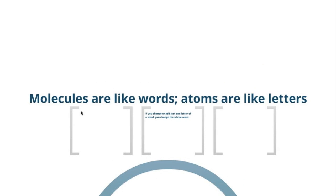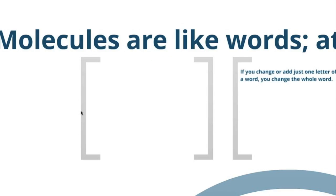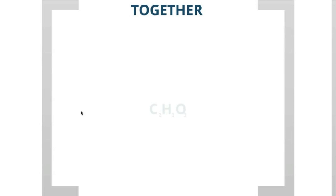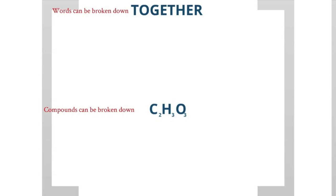To help illustrate, let's think of molecules like words and atoms like letters. Let's look at the word 'together' and the chemical compound C2H3O3. Just like words can be broken down, chemical compounds can also be broken down.